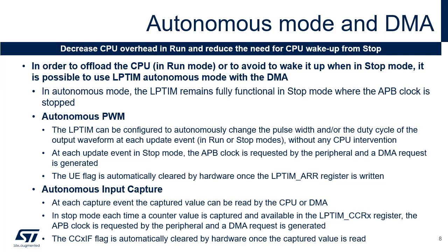LP timers 1 to 3 are autonomous and can operate in stop mode by requesting their kernel clock and their bus (APB or AHB) when needed in order to transfer data by DMA. They use GPDMA or LPDMA depending on the peripheral and power mode. The APB clock is requested by the peripheral each time data must be transferred to or from SRAM. Once the APB clock is received, either an interrupt or a DMA request is generated. In stop mode, the LP TIM counter can be automatically started after the detection of an active edge on one of its external input triggers.